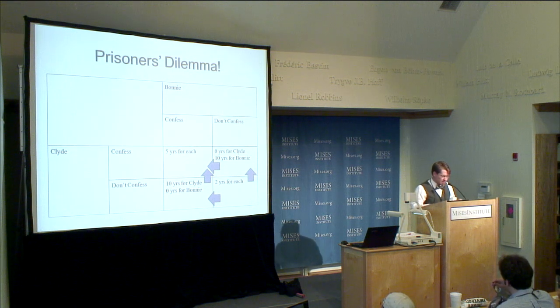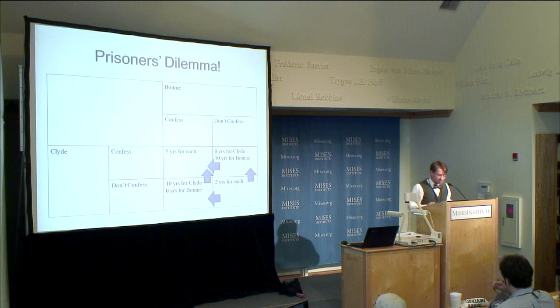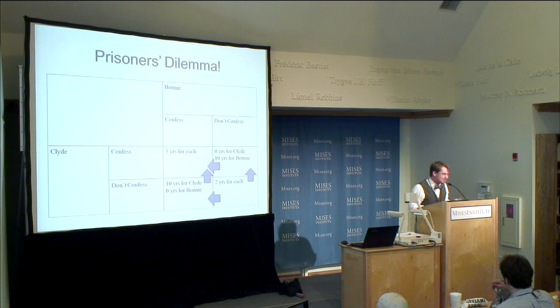An astute student might say: why would you do that, when obviously you're both better off if neither of you confesses? You'd each get two years instead of five. Assuming they don't want to be in prison, this is clearly a bad collective outcome. The story is: collectively we get this bad outcome, but individually each had a rational reason to do what they did. Even if Clyde knew Bonnie wasn't going to confess, he still wants to confess — zero years beats two.